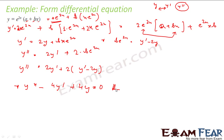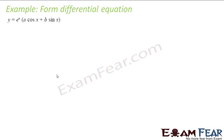This was not a difficult question. We had y, we found y dash, we found y double dash, and then using those two equations we found the value of b, substituted it, and obtained the final differential equation. We will take one more example. Here also we have two variables a and b, so we need to find y dash and y double dash.